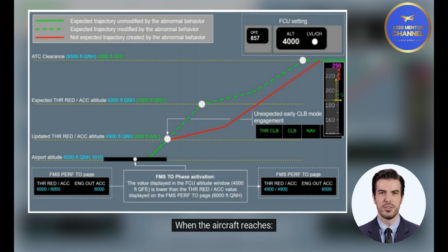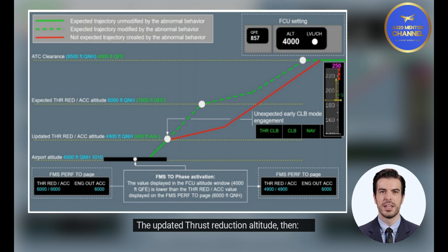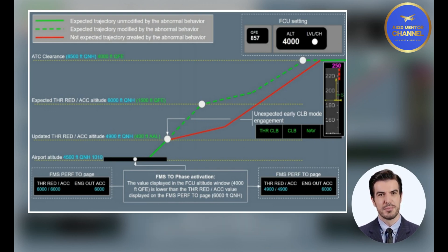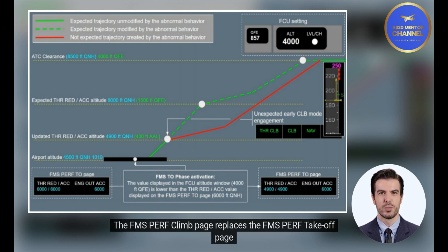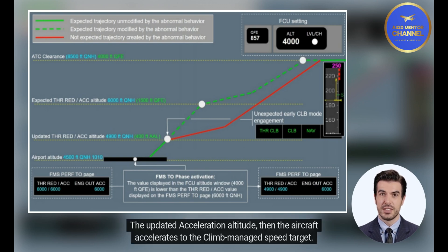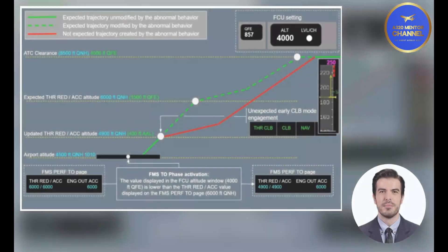When the aircraft reaches the updated thrust reduction altitude, then the lever climb flashes, the climb engages, the FMS PERF climb page replaces the FMS PERF takeoff page. At the updated acceleration altitude, then the aircraft accelerates to the climb managed speed target.